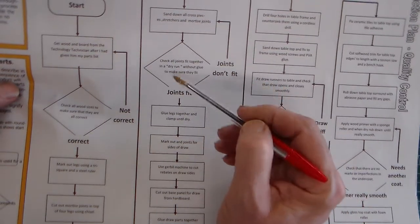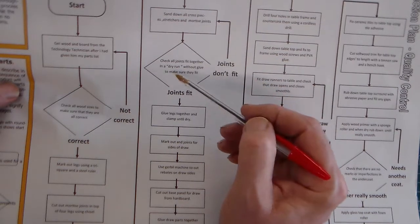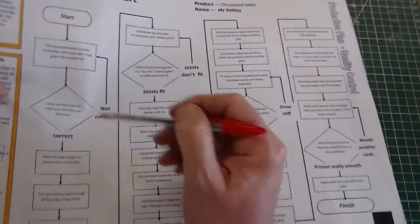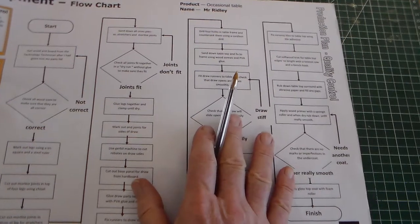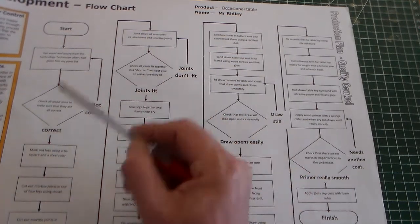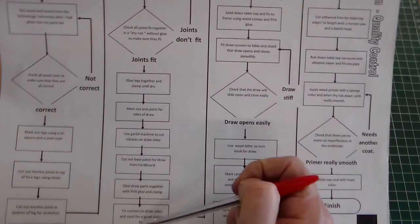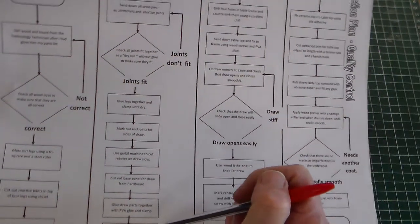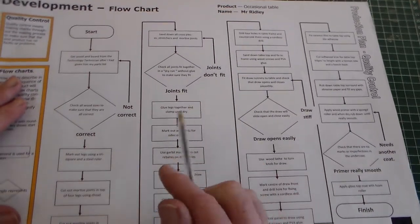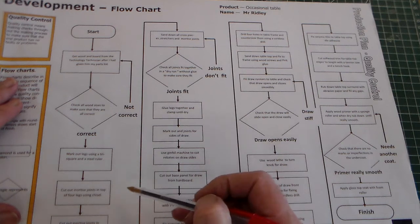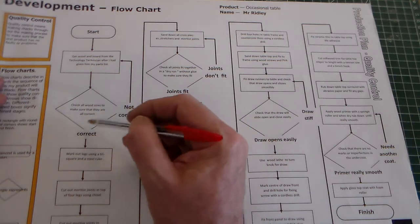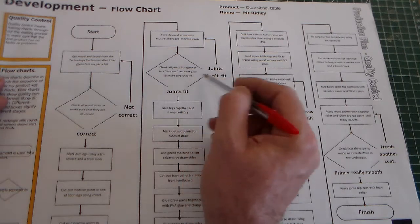This process loop indicates to the examiner the points where quality control checks have been added, and it also shows planning overall. You could create this before making the product, but it's quite easy to do once you start making as you already have ideas. It's useful to do this in conjunction with the Gantt chart, since the Gantt chart gives you your processes and then you can add in your decisions and quality control checks here.